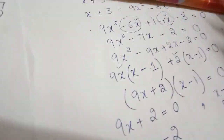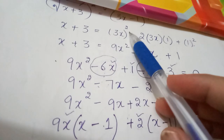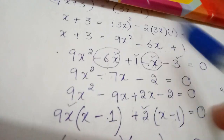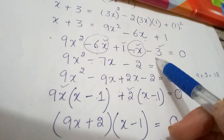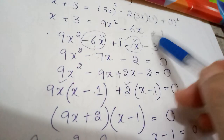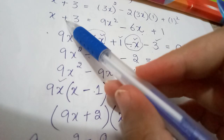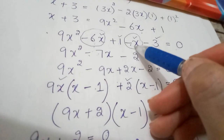Simplifying: we have 9x² − 6x + 1 on the right side and x + 3 on the left. Now we move all terms to one side. When x + 3 moves to the right side, x becomes −x and +3 becomes −3, and the equation equals 0.